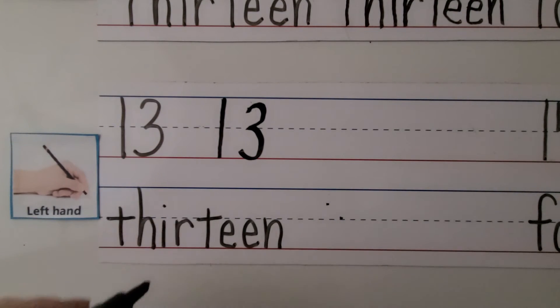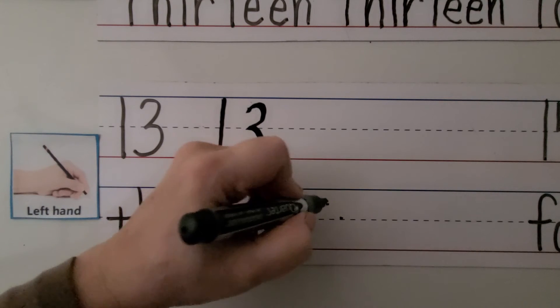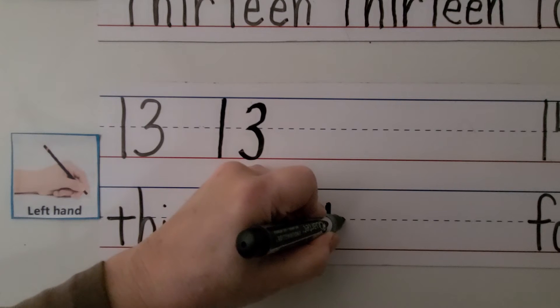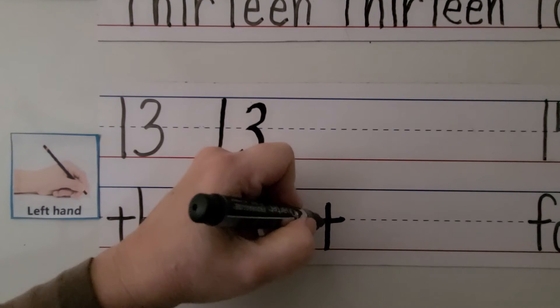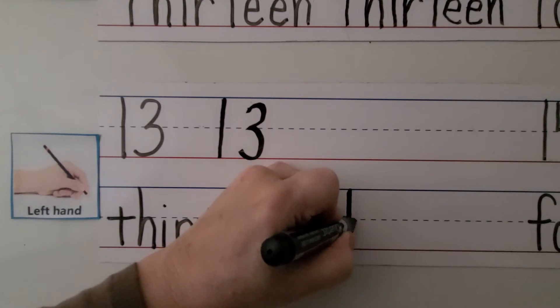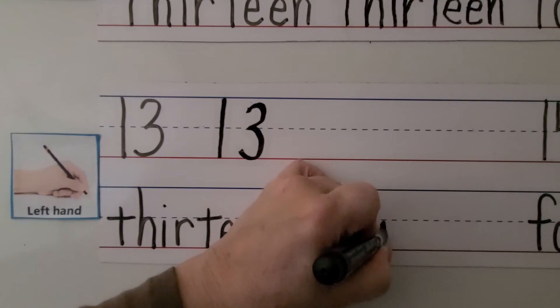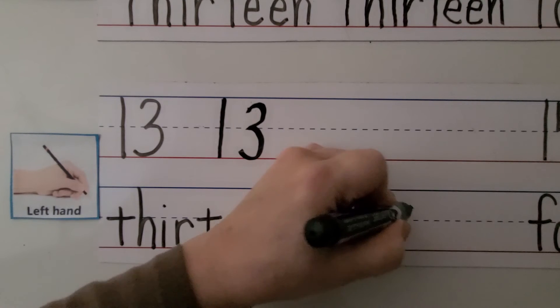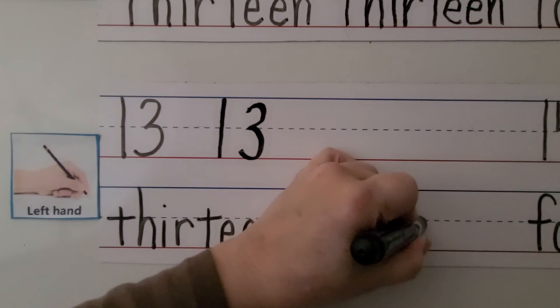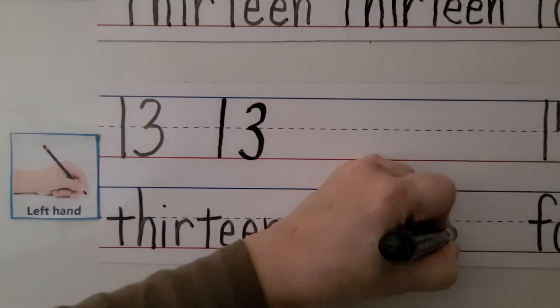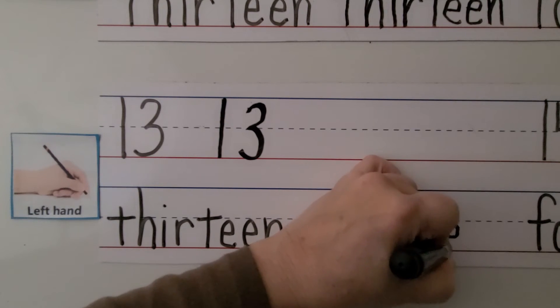We can write the word thirteen with our left hand. We make our T by starting here and coming down. We go on this side to cross it and pull it towards our hand. We make an H, I, R, T, E, E.